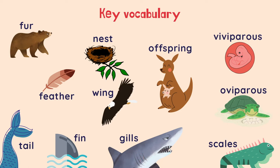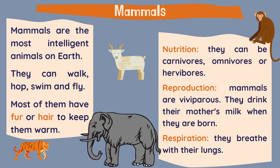If we move on to the birds, birds have wings. Usually they have two wings and they make nests to lay their eggs. An offspring is the child of an animal. We have viviparous animals, where the baby develops inside the mother. And oviparous animals are the ones that lay eggs. The last word is scales, which are these little things on the skin of reptiles and fish.